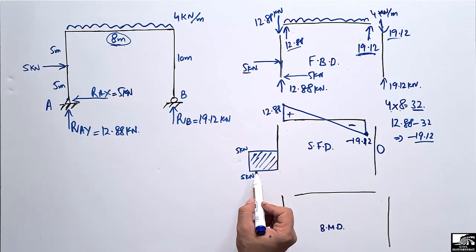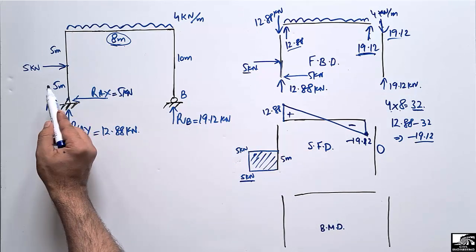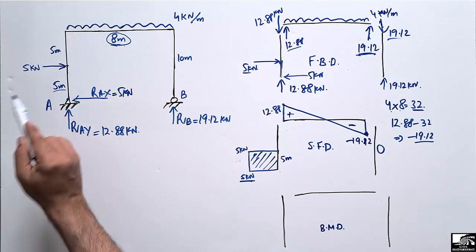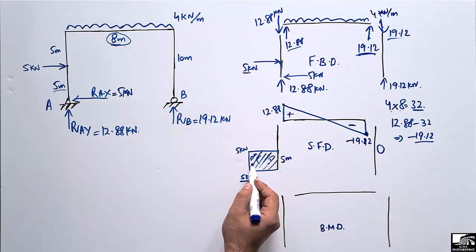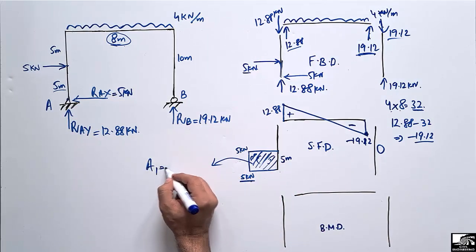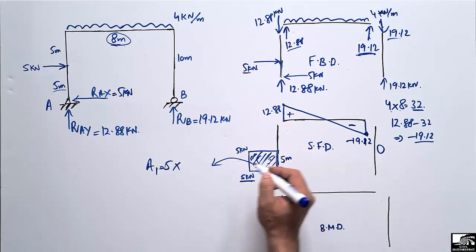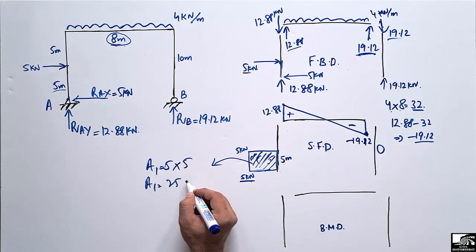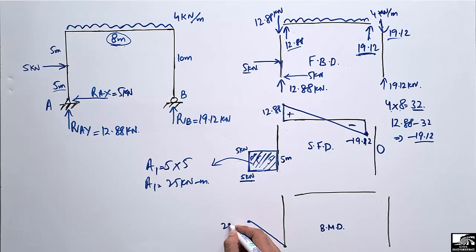For the bending moment diagram of the left column: the shear force magnitude is 5 kN over a height of 5 meters up to the load. The bending moment is found by computing the area of the shear force rectangle: A1 = 5 × 5 = 25 kNm. Starting from zero at the base, the bending moment increases linearly to 25 kNm at the point of load application.